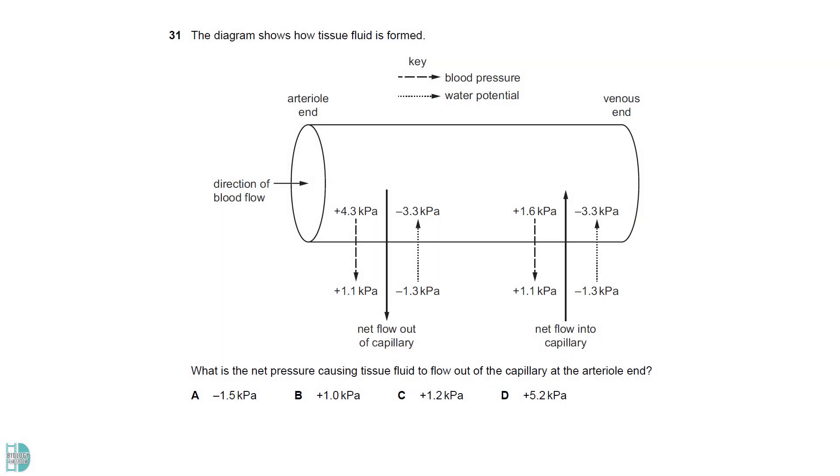At the arterial end, the pressure causing fluid to move out is 3.2 kPa. The pressure leading to the opposite movement is 2.0 kPa. The net movement is the difference in these values.